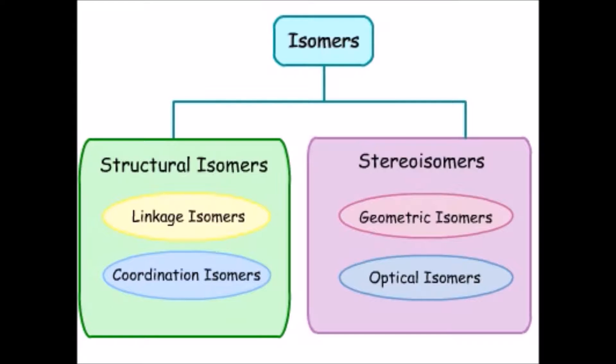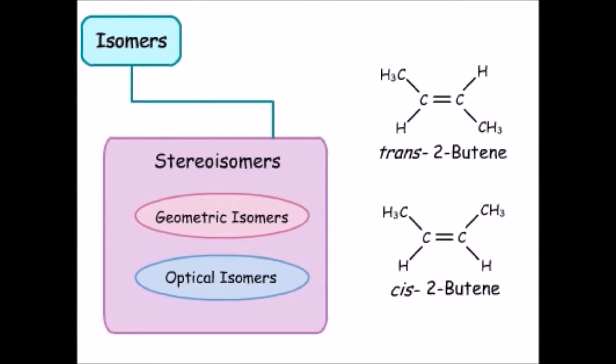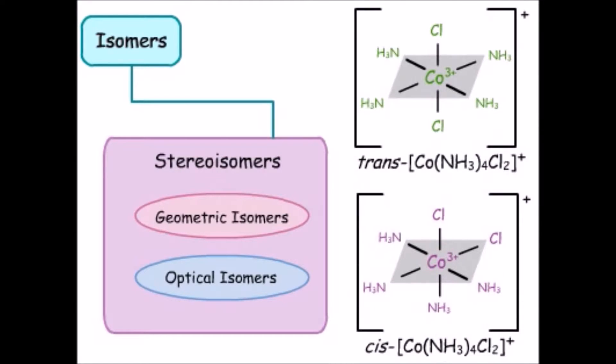Stereoisomers are isomers containing the same connections between atoms, but different arrangements of the atoms in space. We looked at two different classes of stereoisomers. Geometric isomers can be found in simple organic molecules like cis and trans-2-butene, and they can also be seen in coordination complexes.